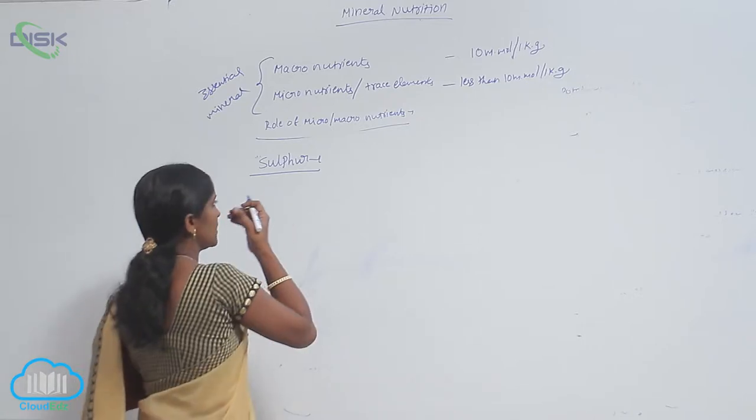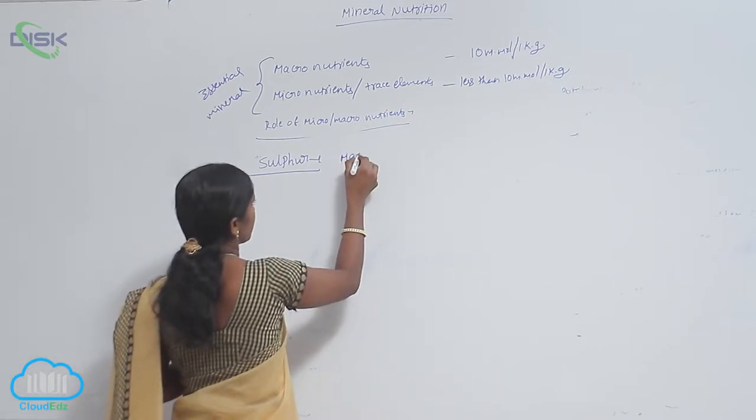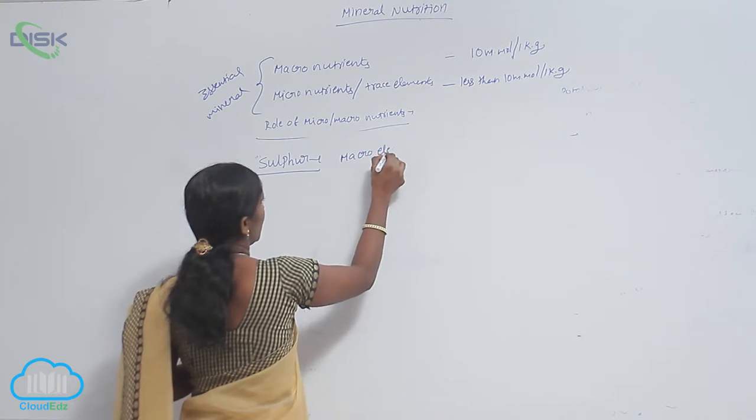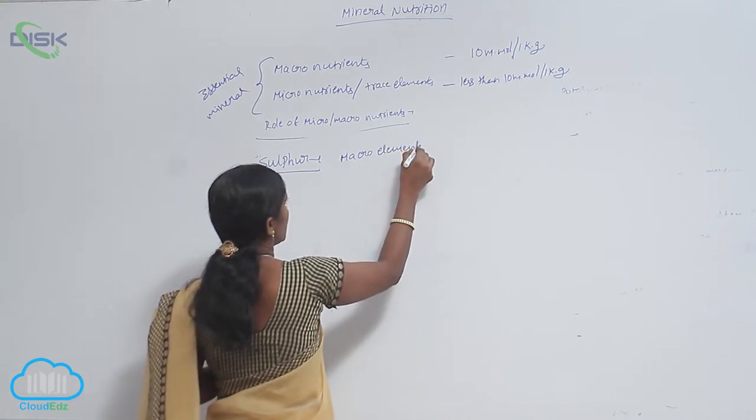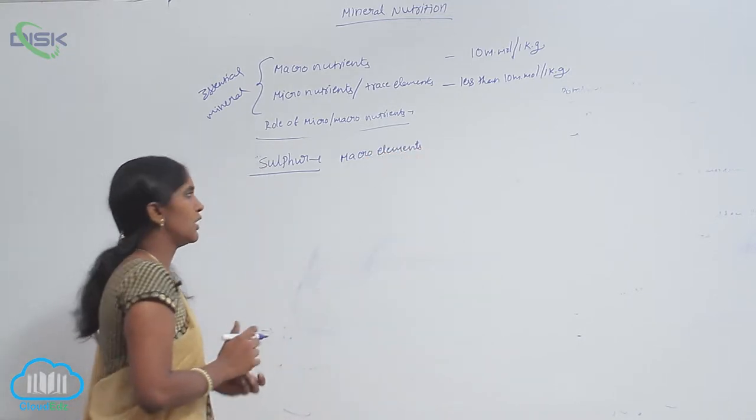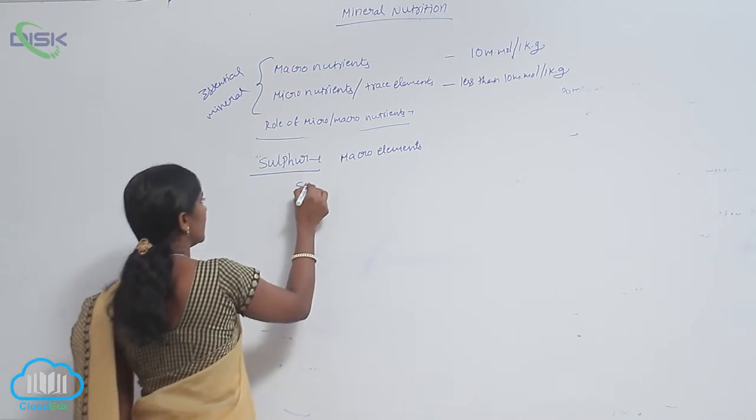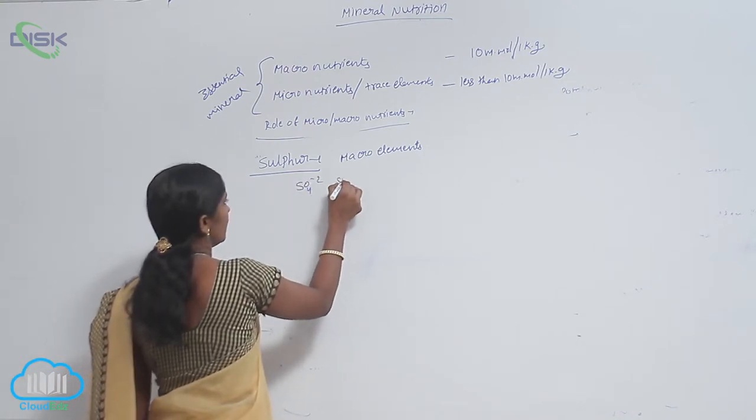Sulfur is a macroelement. Plants absorb sulfur in the form of sulfate ions.